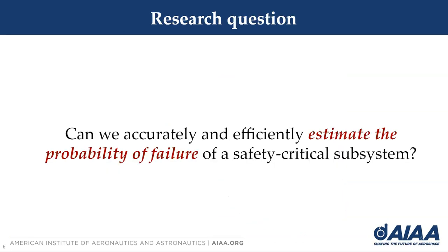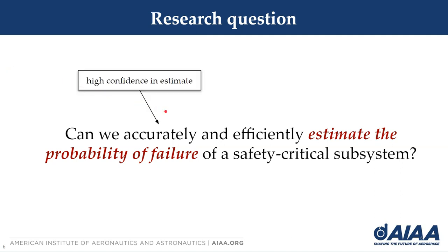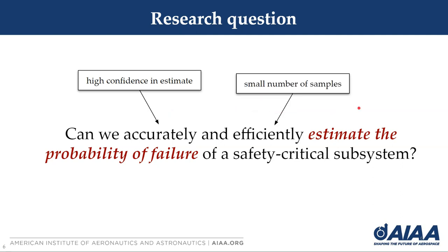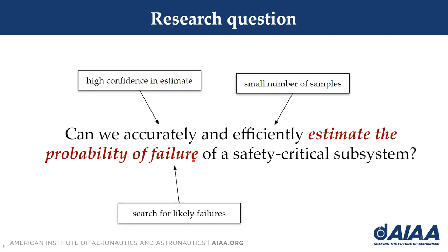The research question I'm trying to answer is: can we accurately and efficiently estimate the probability of failure of a safety critical subsystem? Accurately means we have high confidence in the estimate and provide coverage of our design space to reduce uncertainty. Efficiently means we achieve this in a small number of samples. To estimate the probability of failure, we need to search for likely failures — we have to falsify the system and search for likely failures under a model of the environment the aircraft is likely to operate in.